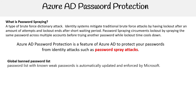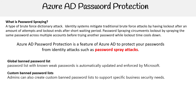The mechanisms here include a global banned password list — a list of known weak passwords that is automatically updated and enforced by Microsoft. You don't have to do anything; you just get that as you use the service. Then you have a custom banned password list, where you provide a custom list of passwords that are more specific to your business security needs.